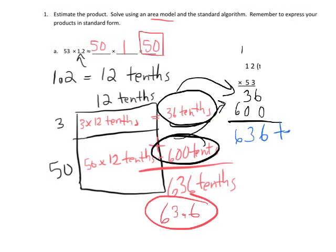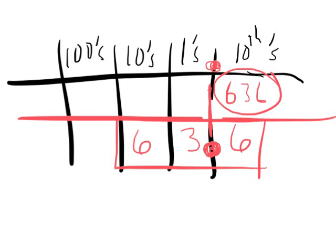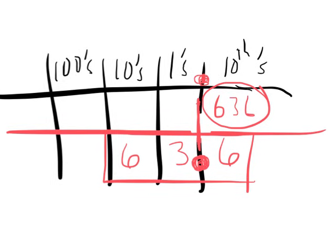And again, we get 636 tenths, which is equal to 63.6. All right, using our, don't forget, we're using our little place value chart to understand that 636 tenths is equal to 6 tenths, 3 ones, and 6 tenths left over.